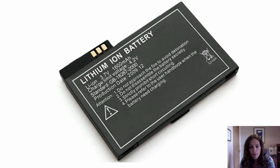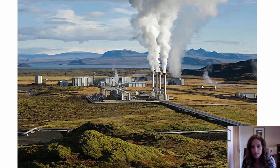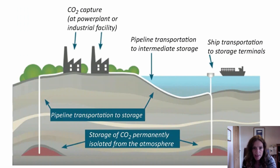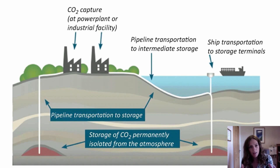Likewise, lithium is critical for making batteries. Understanding how lithium is enriched in different geological environments is another key area of earth science. Geothermal energy utilises the heat from hot rocks deep underground. This heat might be due to the decay of radioactive isotopes in granites or the residual heat of buried magma intrusions. Another important area in the coming decades is carbon capture and storage. This diagram shows CO2 generated from the burning of fossil fuels being injected down into geological storage areas to be isolated from the atmosphere for long time scales.